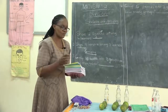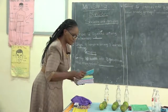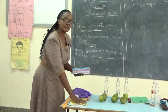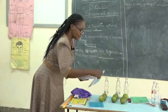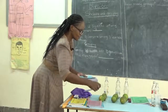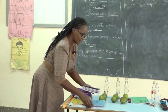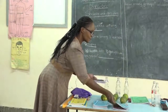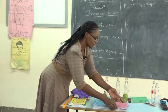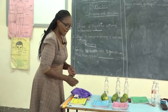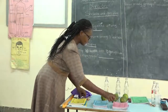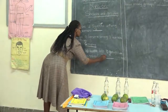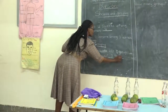Let us count: one, two, three, four, five — that is one group. One, two, three, four, five — another group. One, two, three, four, five — another group. Now let us count how many groups we have: one, two, three. So after grouping fifteen books, we get three groups.